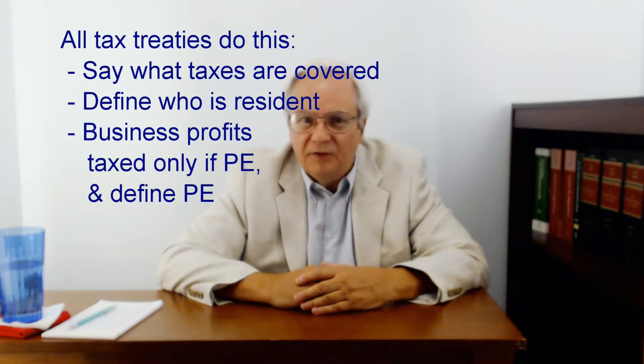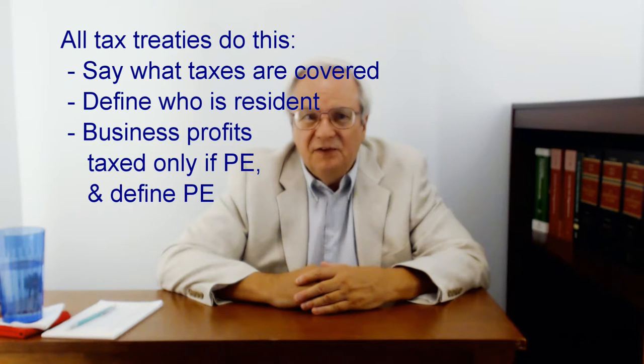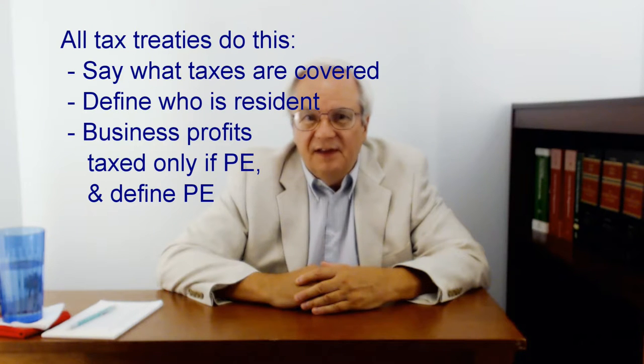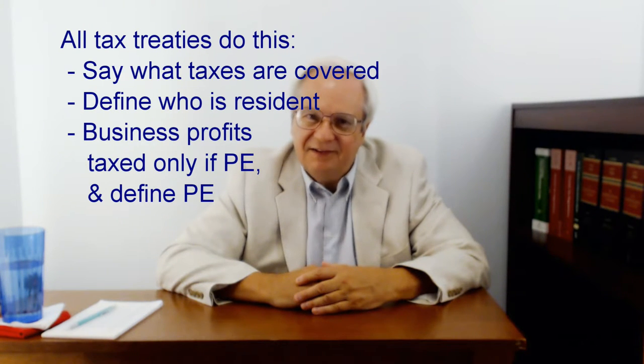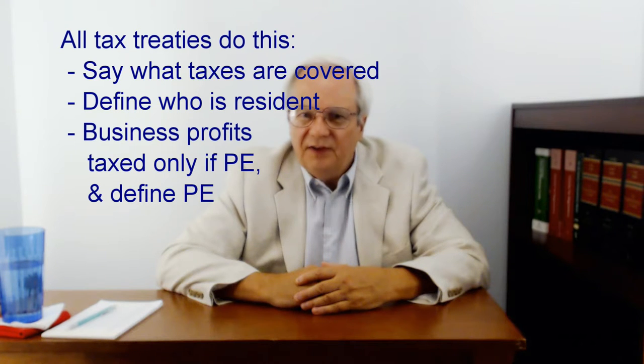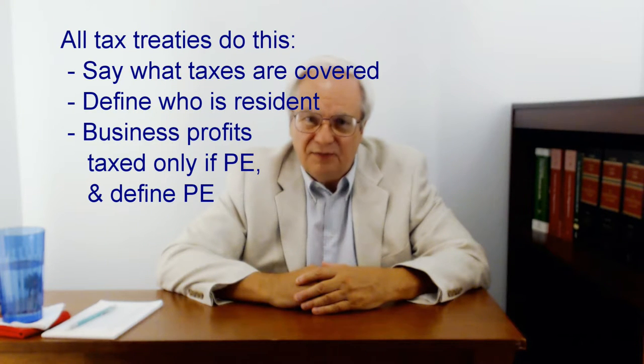The third thing all treaties do is limit tax on business profits to only those situations where the foreign person has a permanent establishment in the taxing country. They also have a definition of permanent establishment, or PE. Most of the treaties have the same definition of what is a PE, but have some notable differences. We'll discuss PE at length.